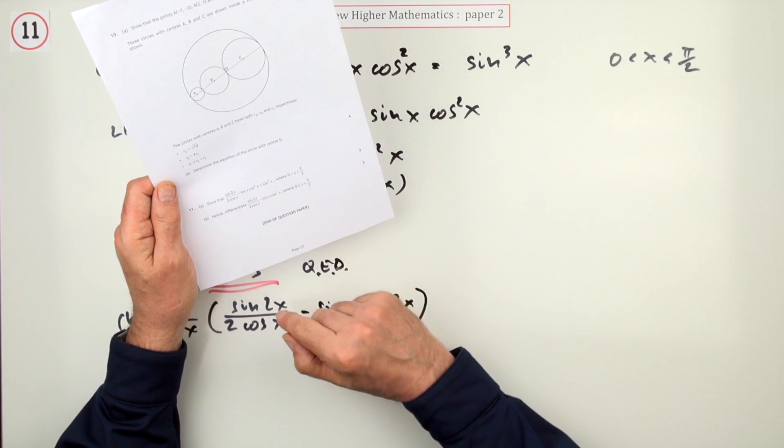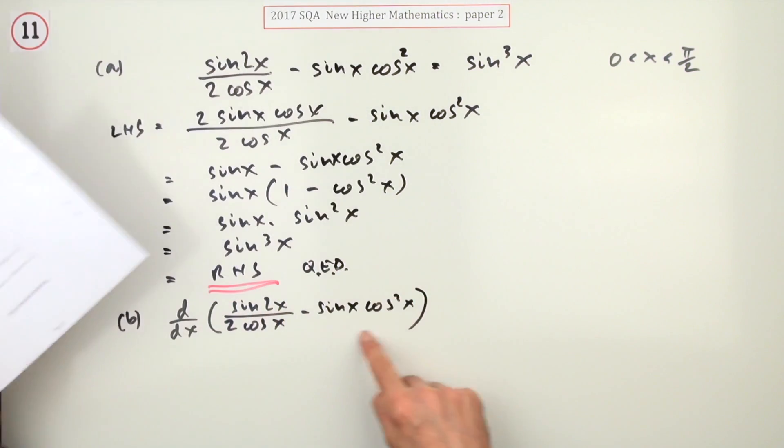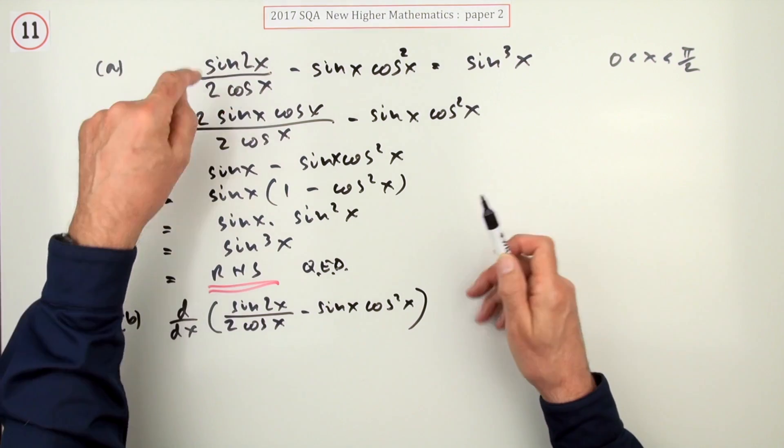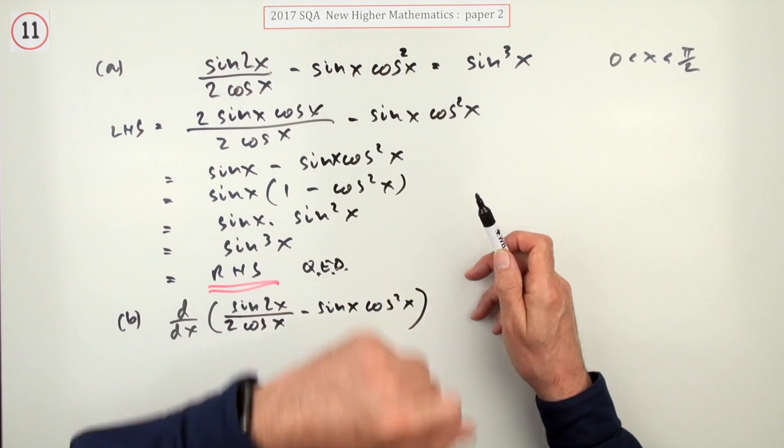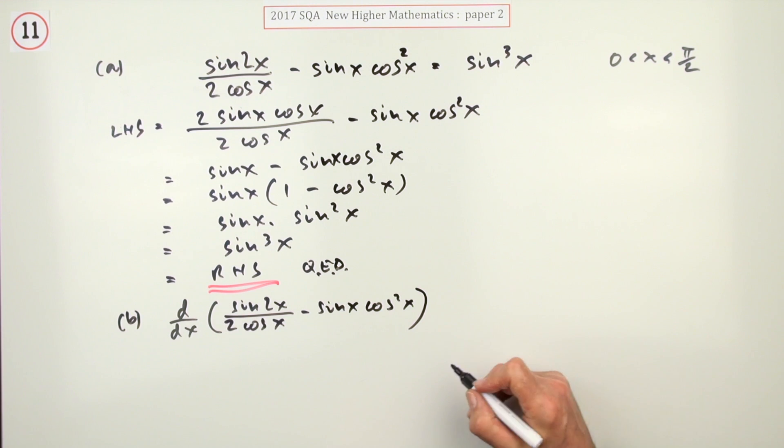And to finish it off, for three marks, it says, how about differentiating this thing you had here? And of course, the whole point was, instead of differentiating that, which you don't know how to do at higher level, because you've got quotients and you've got products, how about just differentiating that instead?